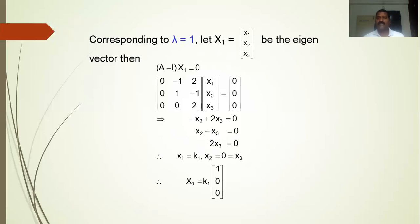Expressing everything in terms of x1: x1 equals x1, x2 equals 0·x1, x3 equals 0·x1. So the eigenvector X1 corresponding to lambda equal to 1 is the solution vector k1 times [1, 0, 0], where k1 is an arbitrary constant. Giving k1 different values produces a whole bunch of eigenvectors — that collection is called the eigenspace corresponding to lambda equal to 1.